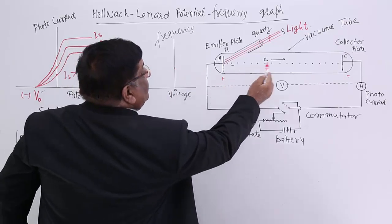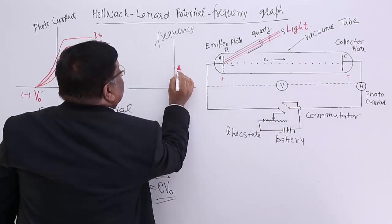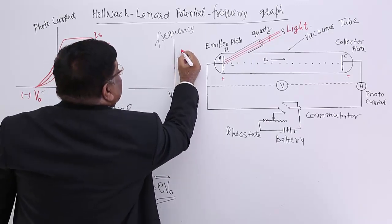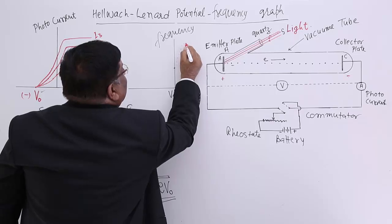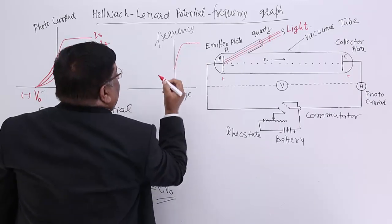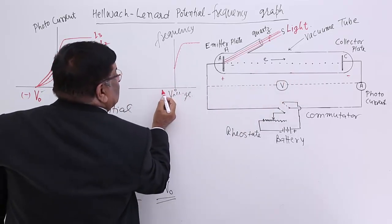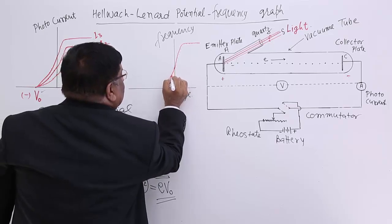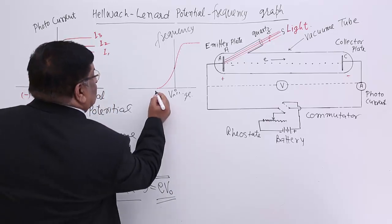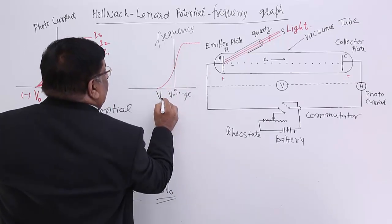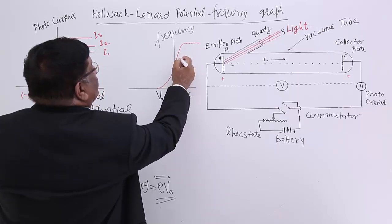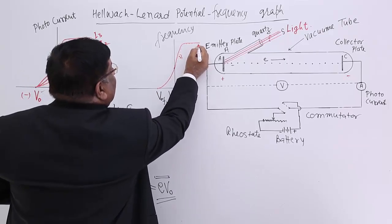Then we give a positive potential to the collector plate and the current increases. As we keep increasing the voltage, the current increases and finally it stops increasing — this is the saturation point and we get this graph. When we decrease the voltage below zero, the current decreases, and here the current has become zero. This is what we have termed the stopping potential for this particular frequency — frequency 1, written as ν₁. This is the saturation current I.